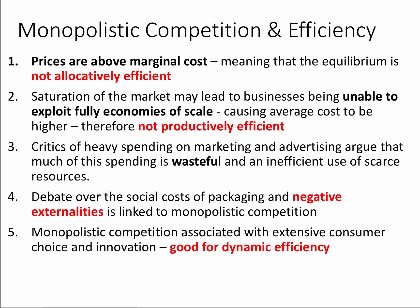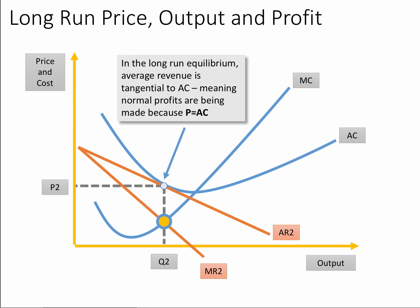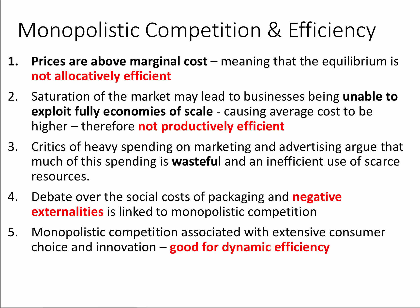The crucial point from an efficiency perspective is productive efficiency. Q2 is not at the minimum point of average cost. The saturation of the market with many different types of similar products might lead to businesses being unable to fully exploit available economies of scale, creating a loss of productive efficiency. There is also the parallel criticism that firms spend heavily on advertising, marketing and packaging — some argue this is both wasteful from an environmental standpoint and not good from the perspective of making full use of scarce resources, particularly if advertising effects tend to cancel each other out.